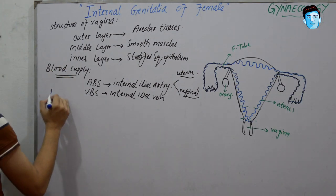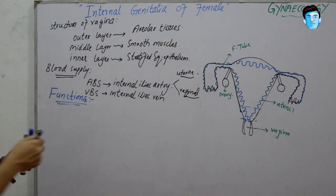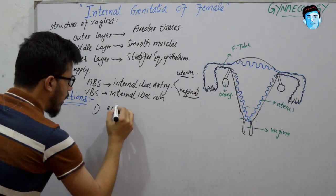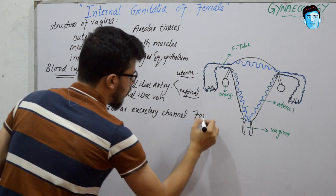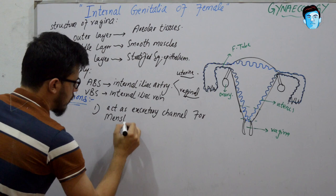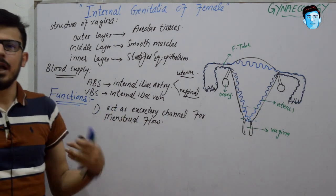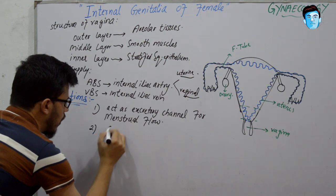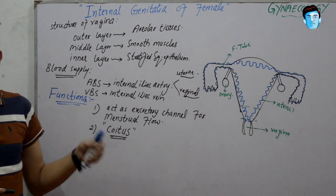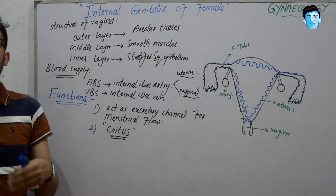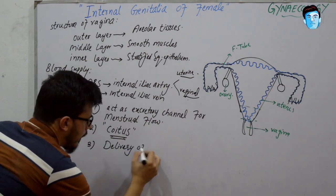Now let's talk about the functions of the vagina. The first function is that the vagina acts as an excretory channel for menstrual blood flow. The second function is coitus — the vagina acts as a copulatory organ during insemination and has the capacity to collect semen. The third function is that it helps in the delivery of the baby.